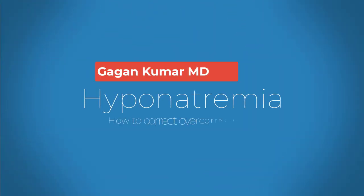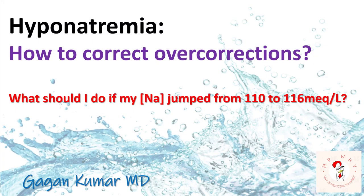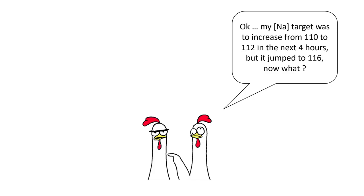Hello everyone. Today we'll be talking about correcting the over-corrections in hyponatremia. We'll answer questions like: if my sodium increased from 110 to 116 with the next lab, what should I do? Let's take an example in which your target sodium was to increase from 110 to 112 in the next four hours, but the next sodium comes up to be 116. Now what should you do about it?